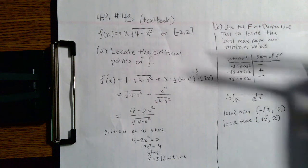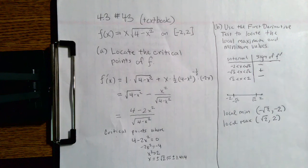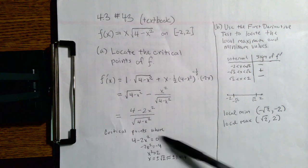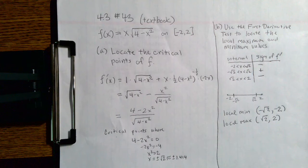So here we take the derivative using the chain rule and the product rule. Simplify that expression to help us identify the critical points, which in this case are going to be plus or minus the square root of 2.